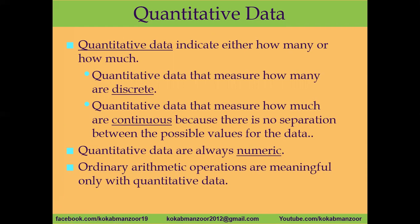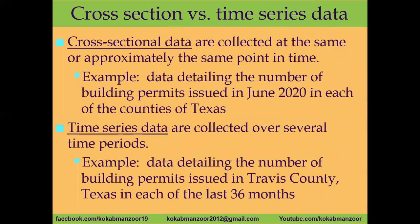So that is the difference between qualitative and quantitative data. Now, what is cross-sectional and time series data? Cross-sectional data means we collect data at one certain point in time. For example, data on the number of building permits issued in June 2020 in each of the counties of Texas — that is one point in time. Similarly, collecting the incomes of people living in Texas in June 2020 is getting data at the same point in time. That is called cross-sectional data.